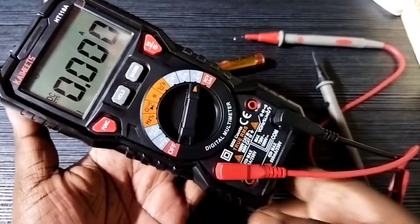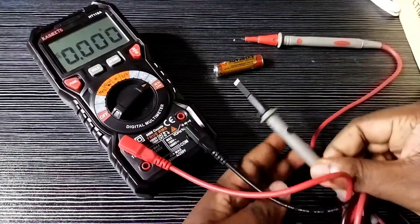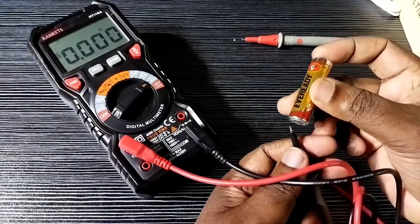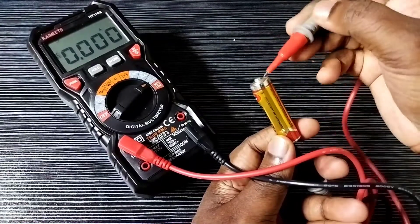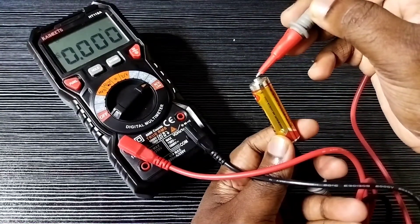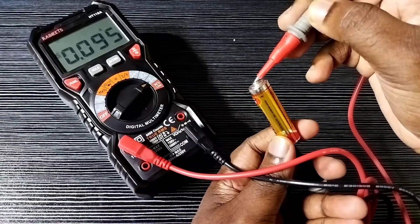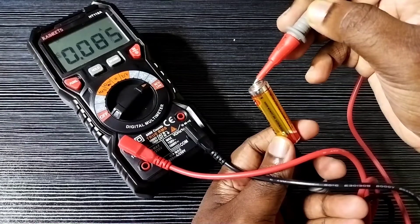Now take the battery and measure the current. Touch the black cable to the negative terminal of the battery, then touch the red cable to the positive terminal. You can see the measurement in ampere.